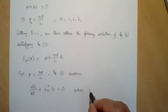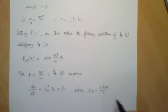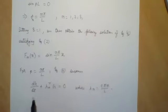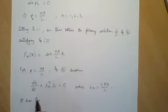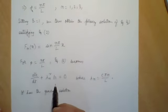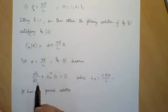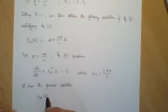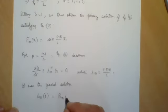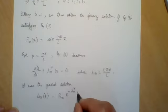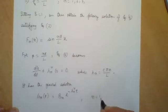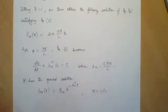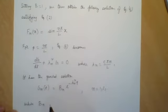Where λ_n is given by c times nπ/l. This equation has a general solution that can be solved using the method of integrating factors — a first-order linear differential equation as learned in 12th standard. The solution is g_n(t) = B_n·e^(−λ_n²·t), where n takes values 1, 2, 3, ... and B_n is a constant.